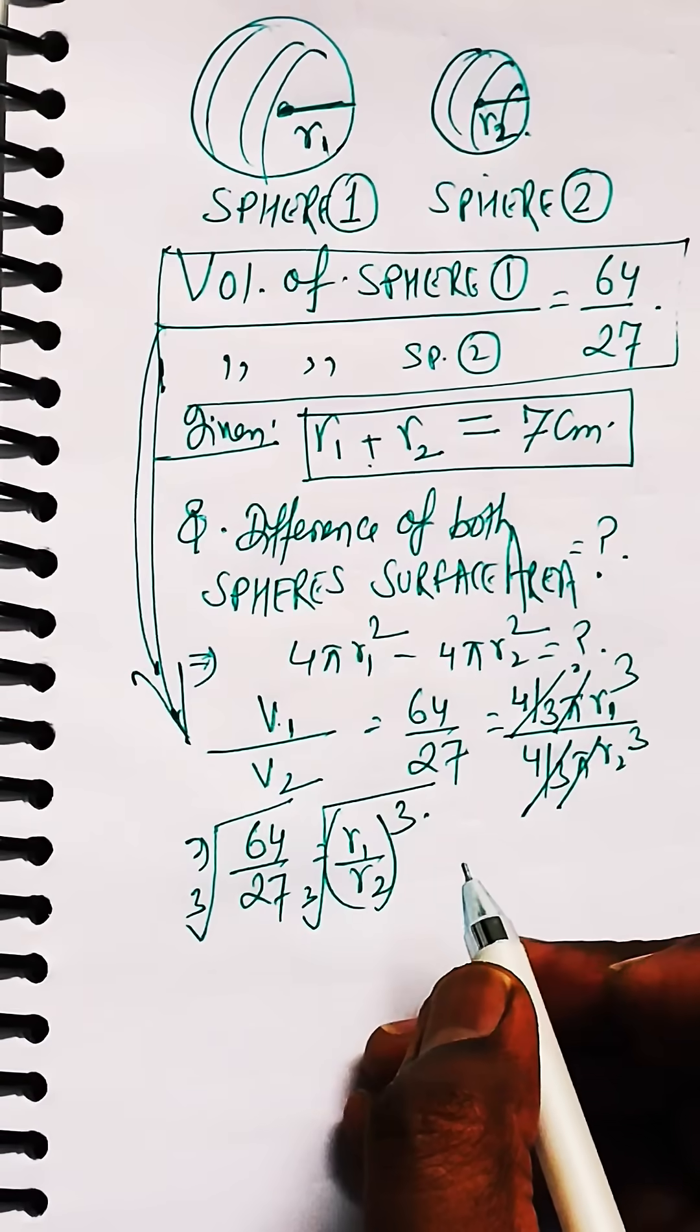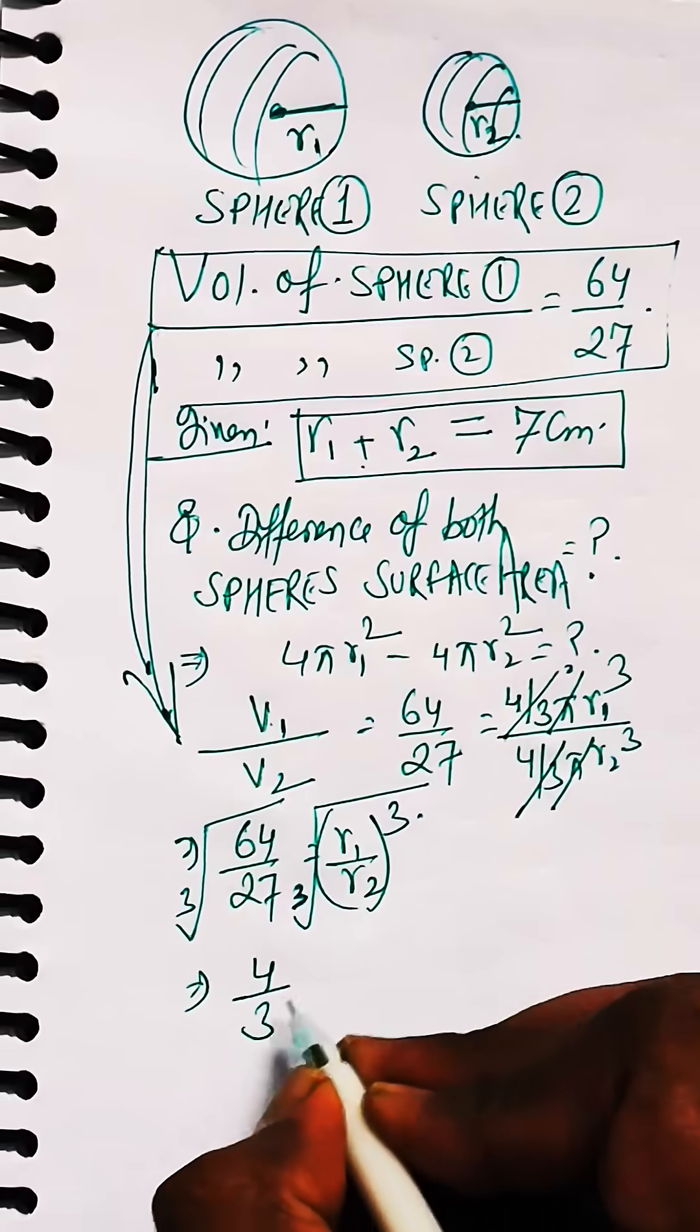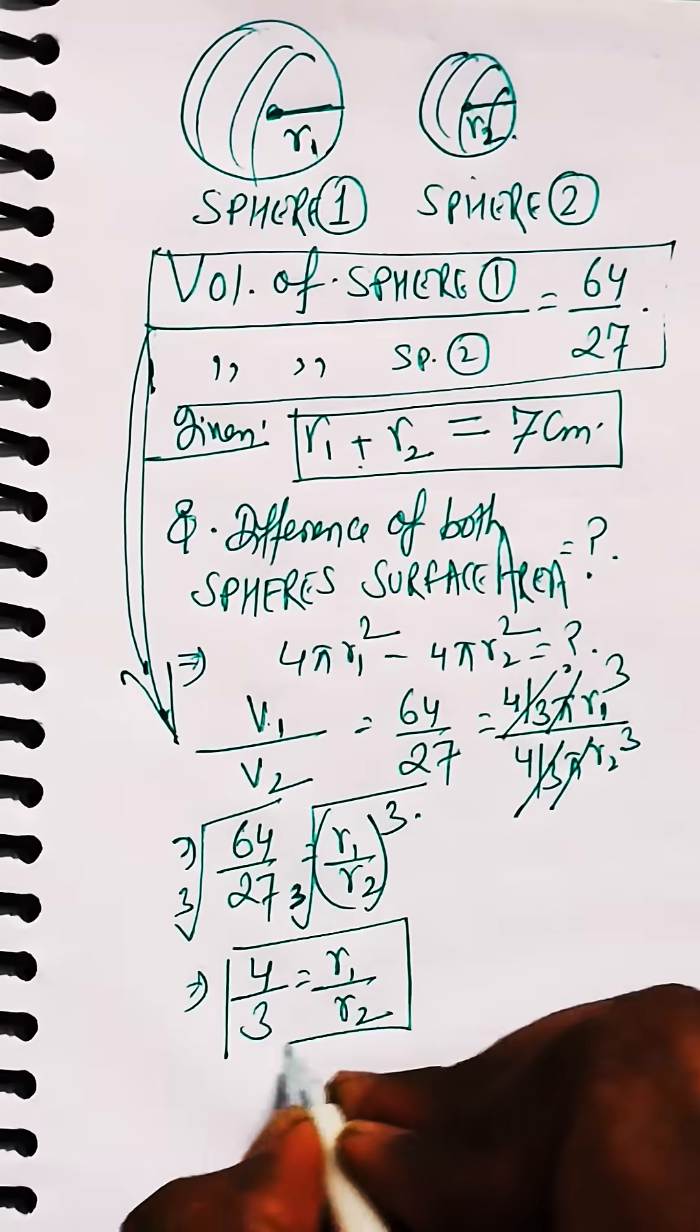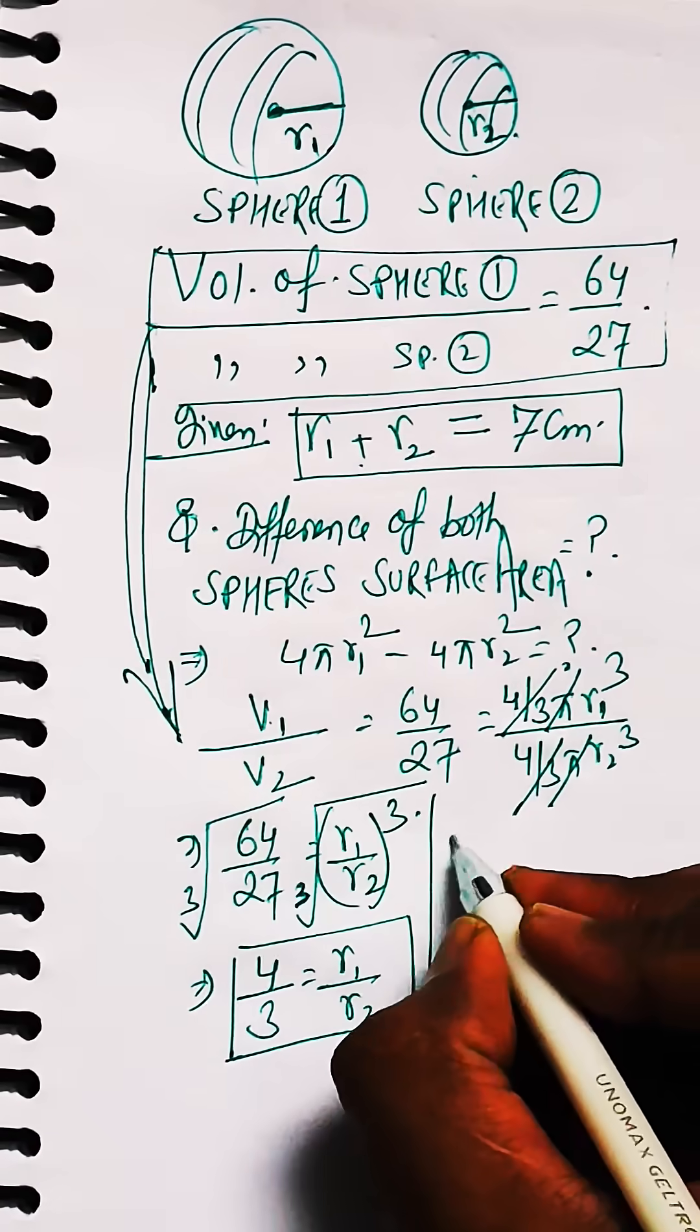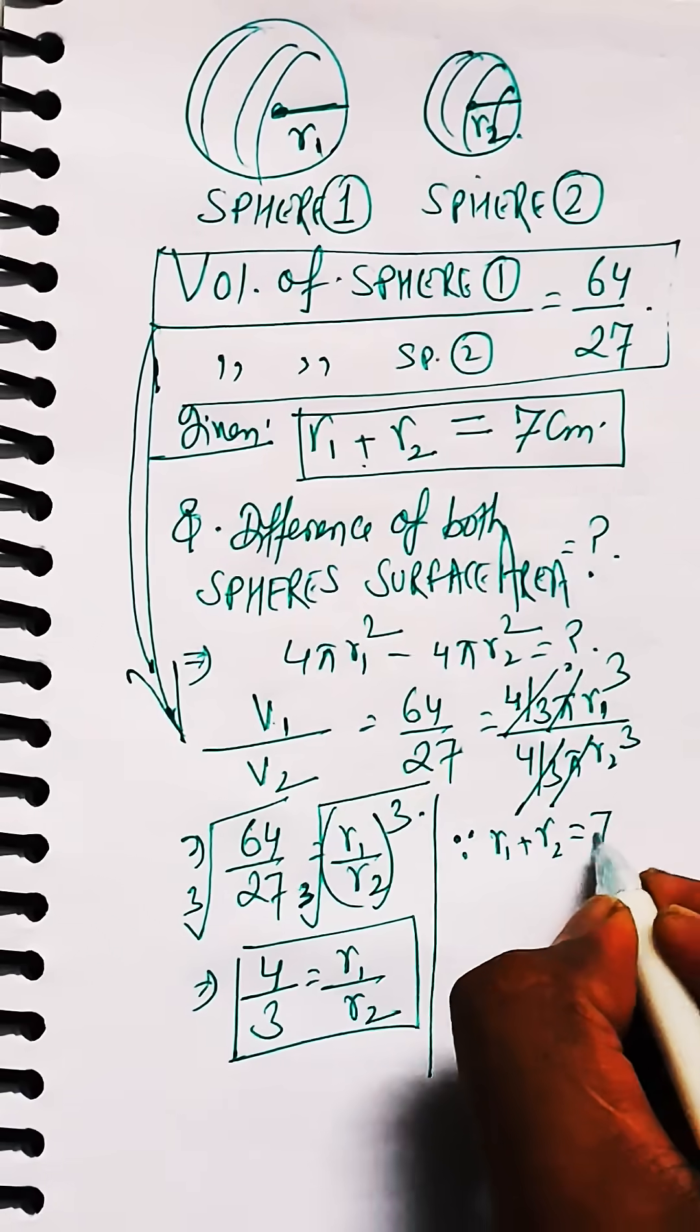To get the value of r1 by r2, you can see cubic root of 64 is 4 and cubic root of 27 is 3. So 4 by 3 equals r1 by r2. This is the relation which is derived.